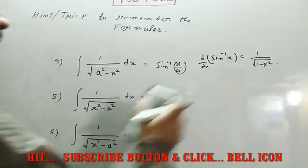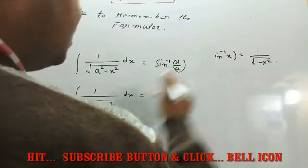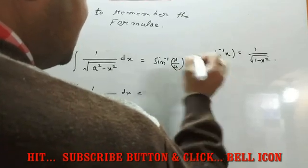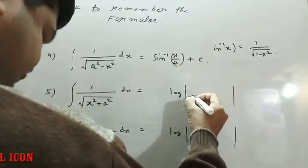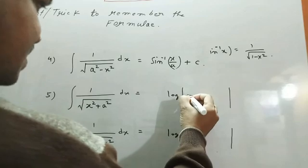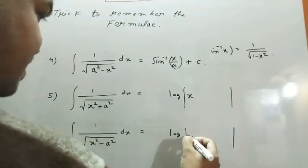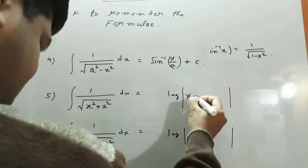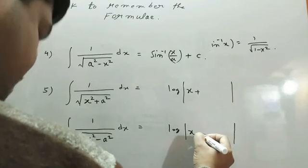Derivative of sin inverse x is 1 upon under root of 1 minus x square. So, here like this type. So, this formula, you can easily remember sin inverse x upon a, plus c, c is the integrating constant.